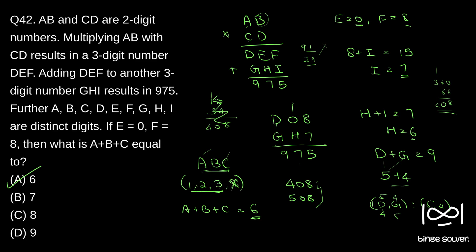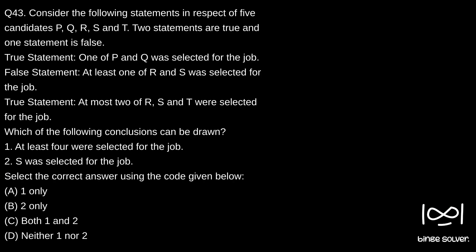Next question, question 43. Consider the following statements in respect of five candidates P, Q, R, S and T. Two statements are true and one statement is false. True statement: one of P and Q were selected for the job. False statement: at least one of R and S were selected for the job. True statement: at most two of R, S and T were selected for the job.